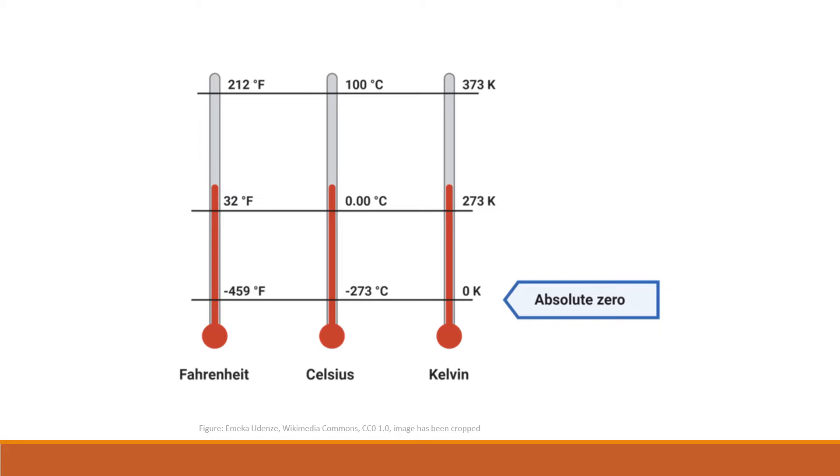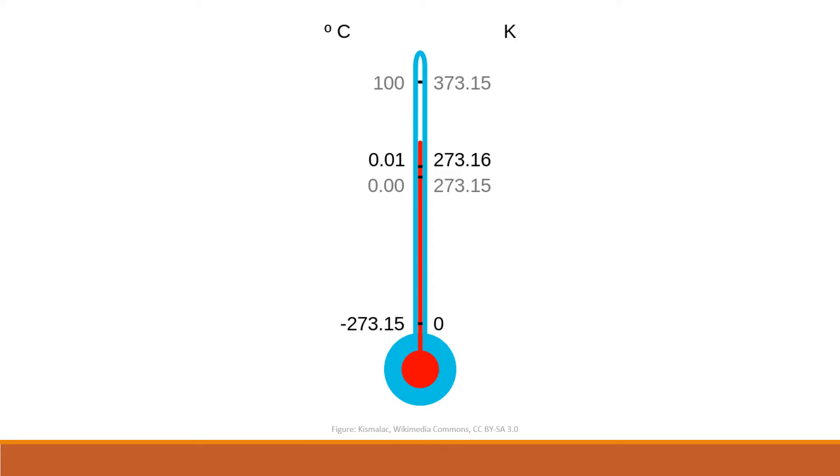Absolute zero is the temperature at which molecular motion stops. Lower temperatures do not exist. The size of the Kelvin is identical to that of the Celsius degree. The only difference is the temperature that each designates as zero. Conversion between these two scales simply requires an adjustment for the different zero points.